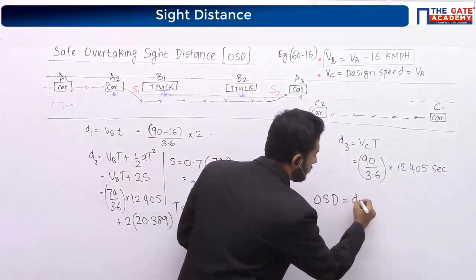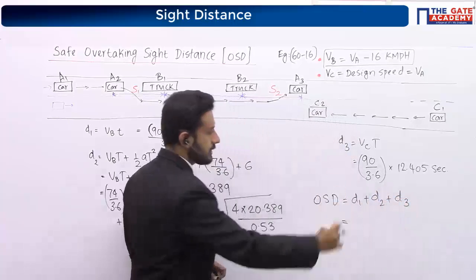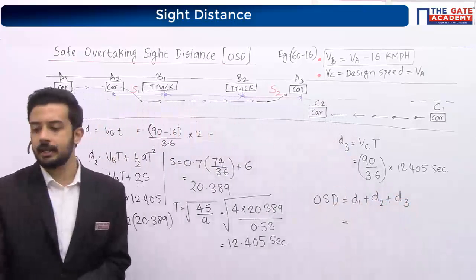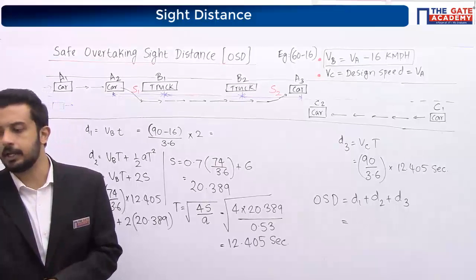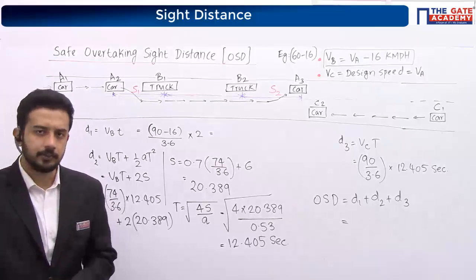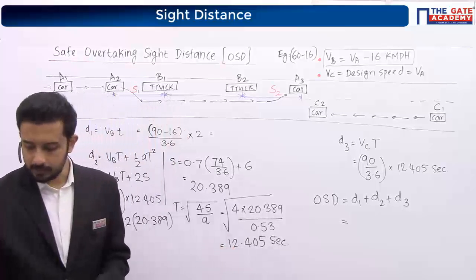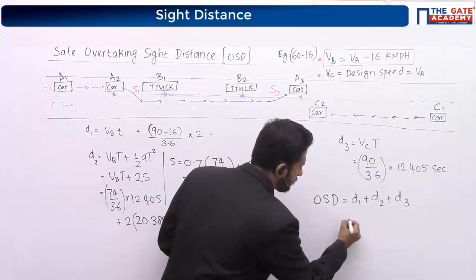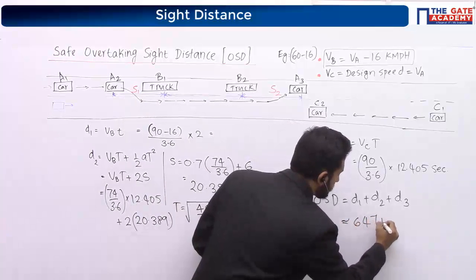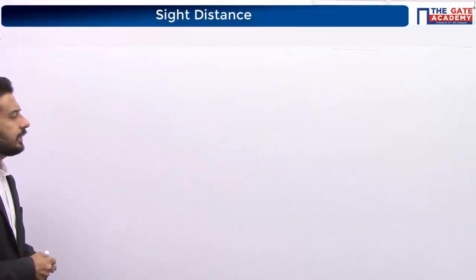So taking D1 plus D2 plus D3 — why are we taking D3 also? Because they have not given that it is a one-way traffic road. They already mentioned it is a two-lane two-way traffic road. If not mentioned also, it is our general case. So finally, the total OSD comes out to approximately 647.